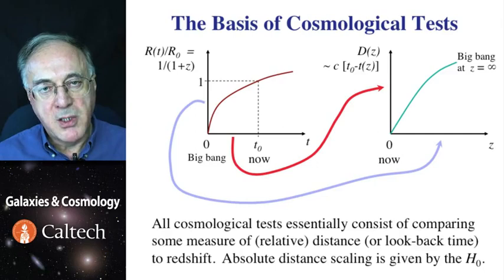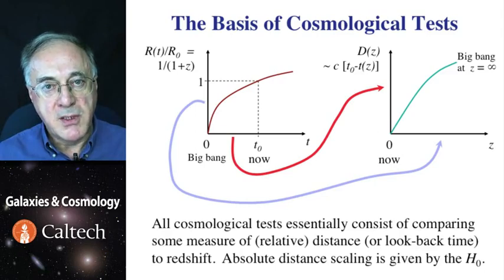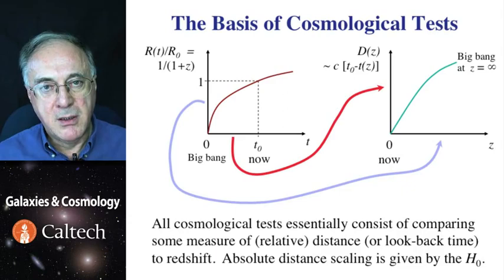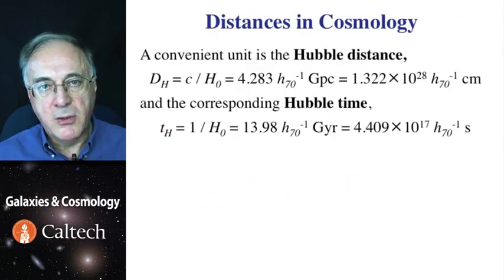So essentially, all cosmological tests boil down to this. We have to somehow measure a set of distances to points as a function of redshift. And because the whole thing just scales with Hubble constant, we only need to determine the shape of that curve.